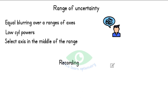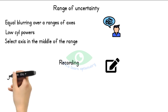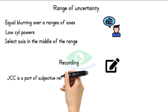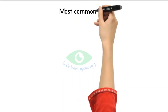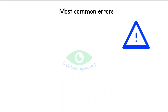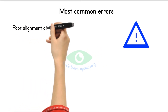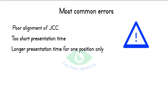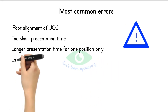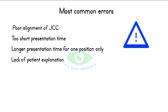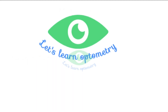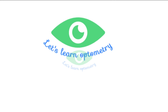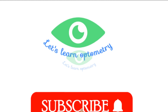Recording: The results of JCC are not recorded separately, as the technique is just part of the subjective refraction. Sources of error include poor alignment, too short a presentation time, longer presentation time in one position than the other, and lack of explanation to the patient. Thanks for watching — subscribe to Let's Learn Optometry for more optometry content.